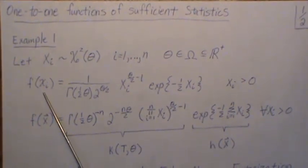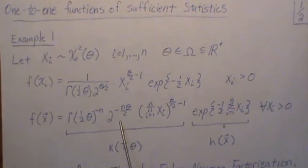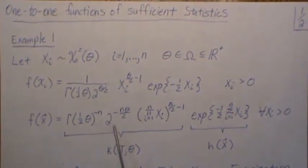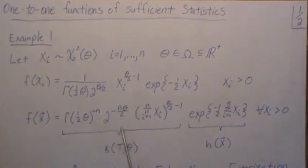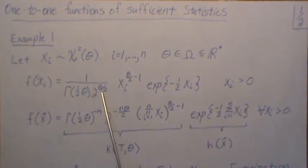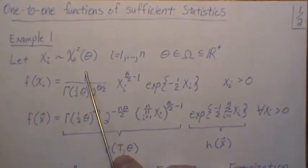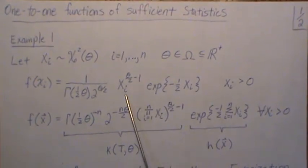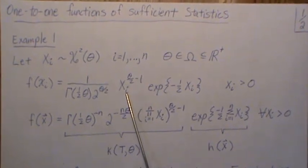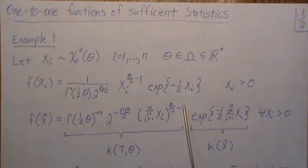The joint density is the product of these — f of x1 times f of x2 all the way up to f of xn. Since these are constants out front, they just get multiplied n times, so this is to the nth power. Then we have x1 times this, x2 times this, etc., and since they all have the same exponent, we can just take the product and raise it.